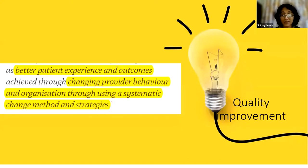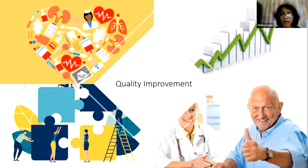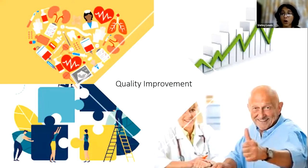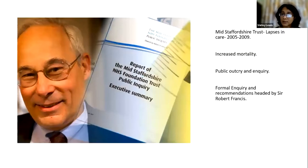Quality improvement is for better patient experience and outcomes. It uses a very systematic method and various strategies to bring about changes in processes as well as in the people involved in delivering care. The quality improvement process has various methods — it may involve team building, auditing, identifying a particular problem, measuring that problem, and ultimately seeing change.